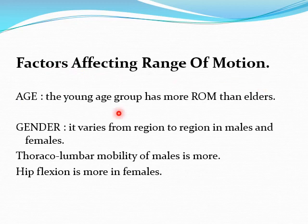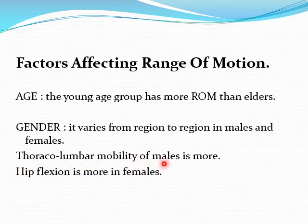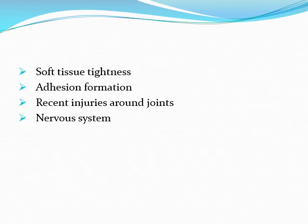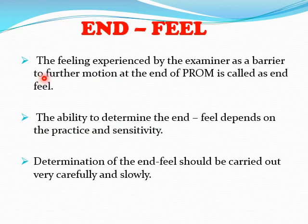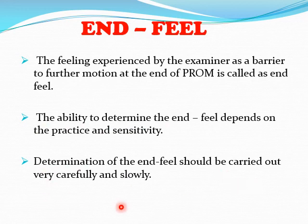Factors affecting range of motion include age — younger individuals have more range of motion than the elderly. Gender also plays a role; cervicolombar mobility is greater in males than females, while flexibility is greater in females. Other factors include soft tissue tightness, adhesion formation, recent injury around the joints, and the nervous system. End feel is the sensation experienced by the examiner as a barrier to further motion at the end of passive range of motion. Determination of end feel should be carried out carefully and slowly.